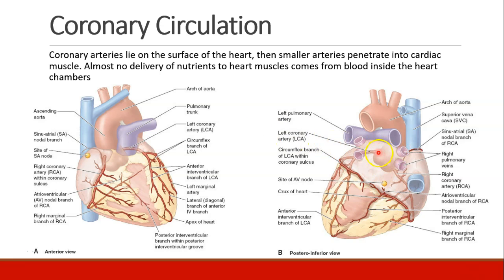Looking at the other side of the heart, we can see behind the heart is that left — now we're behind, and this is the front of the heart, where there's that left main branching into the left coronary. Here's the circumflex branch of the left coronary coming around the back of the heart, and almost meeting up with this branch of the right coronary artery coming over here.